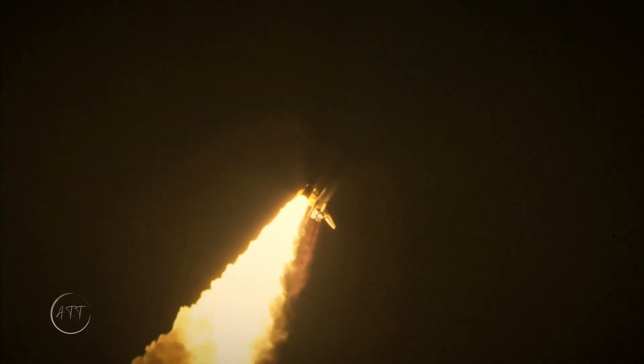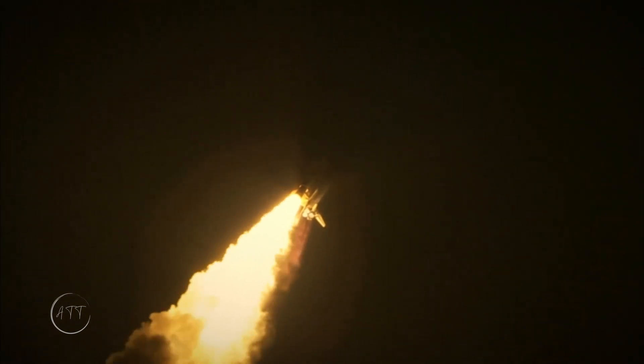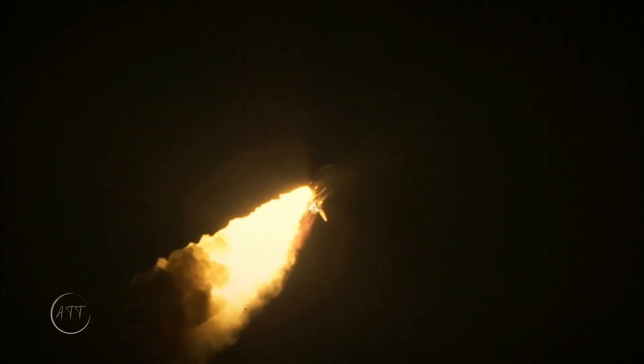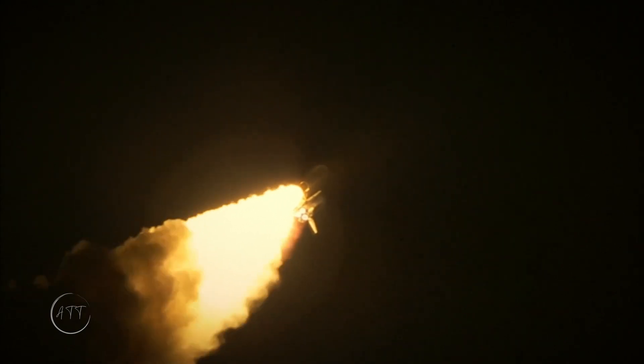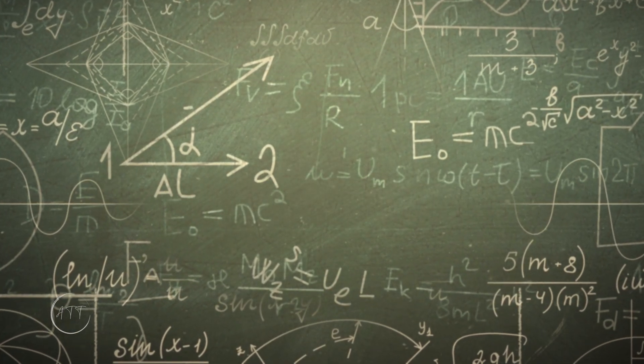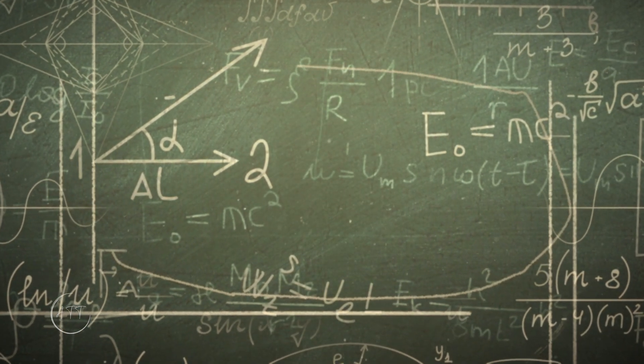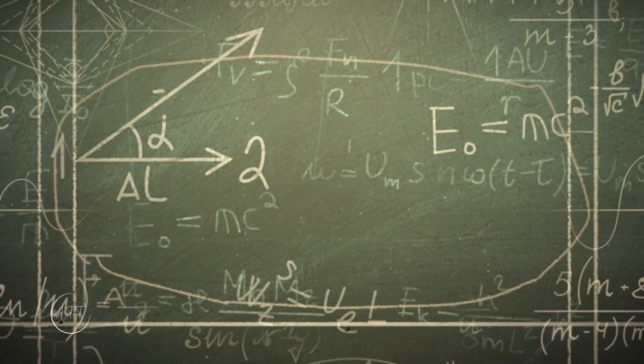For centuries, the speed of light has been an impossible limit. 299,792,458 meters per second. A number that feels more like dogma than science. Einstein sealed it as an unbreakable barrier. Nothing with mass can reach it. And yet the question remains. What if we could?